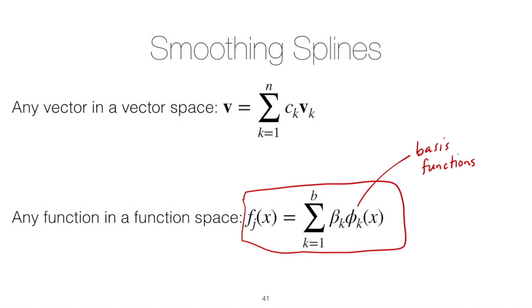This is really analogous to vector spaces from basic linear algebra. If you recall, any vector space—suppose our vector v lives in R²—it can be written as a linear combination of basis elements, in this case basis vectors. In that case our n might be 2.